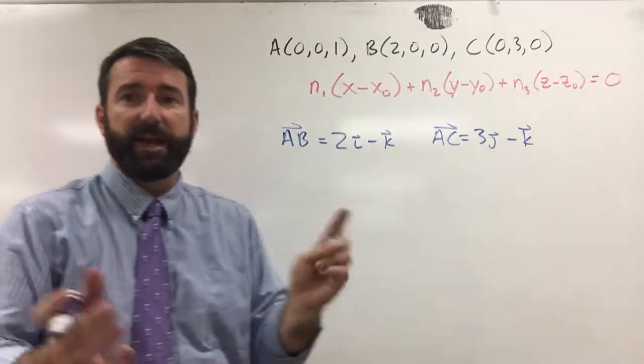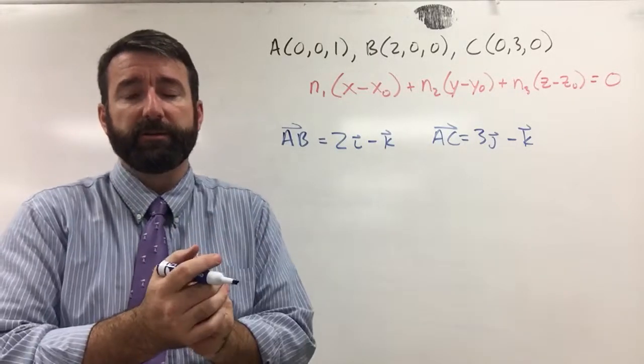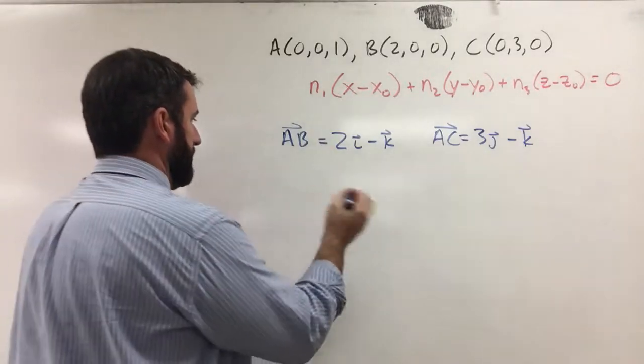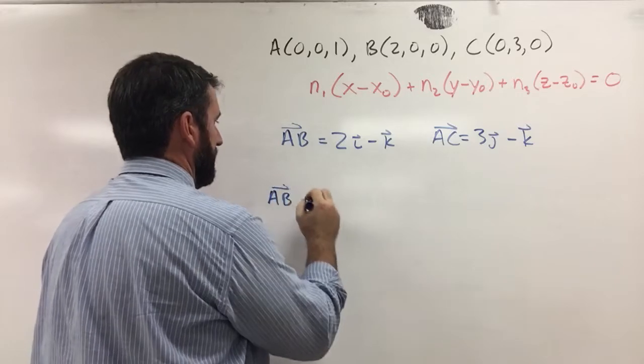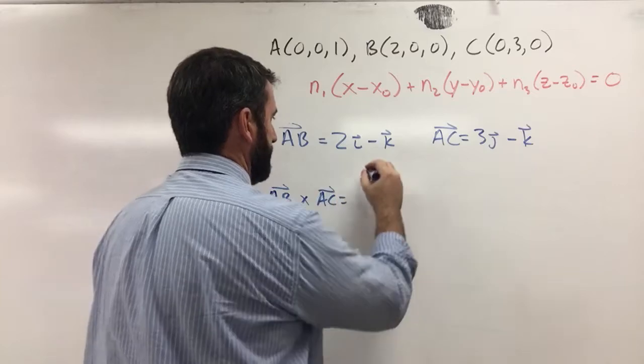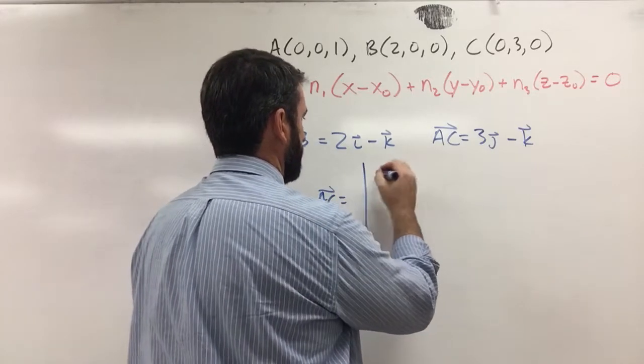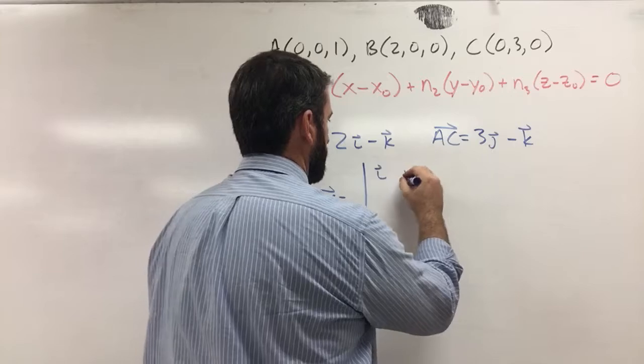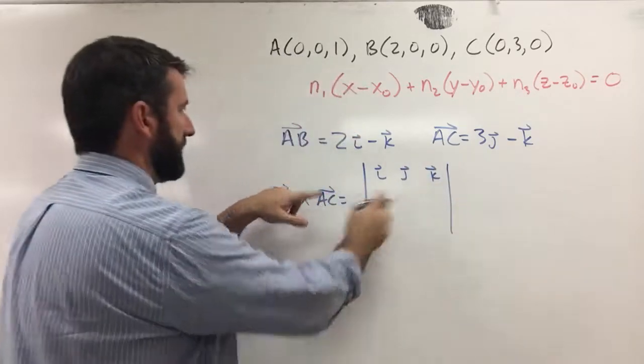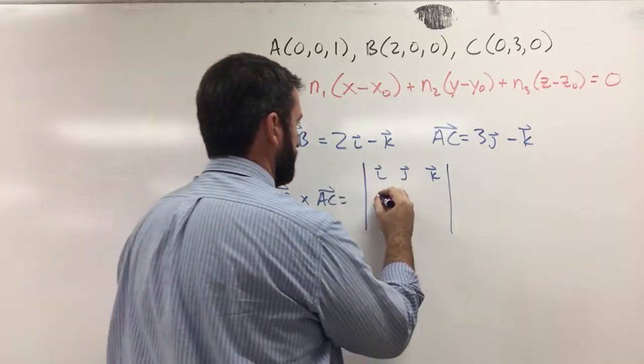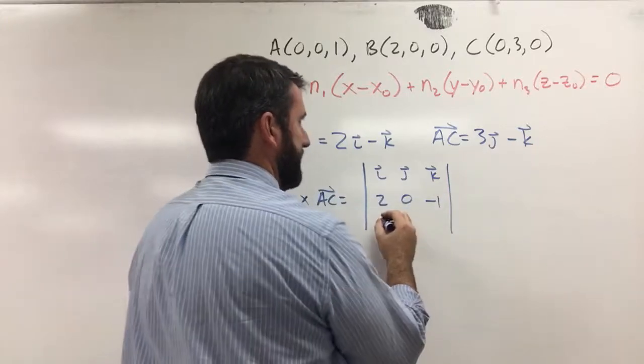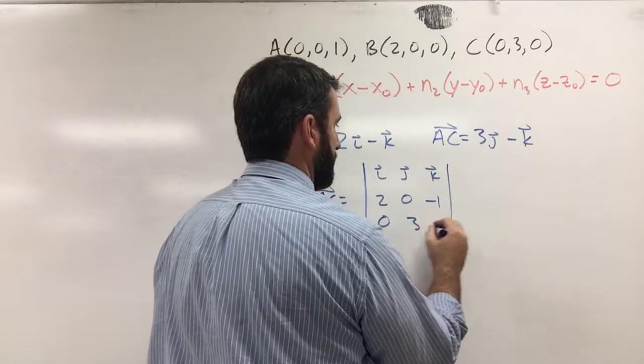So we've got these two vectors and if we take the cross product of those vectors, that's going to give us our normal vector. So ab cross ac is going to be given by the determinant of this matrix i, j, and k. And then the second row is going to be the components of ab. So 2, 0, negative 1. And then the third row is the components of ac. That's 0, 3, negative 1.